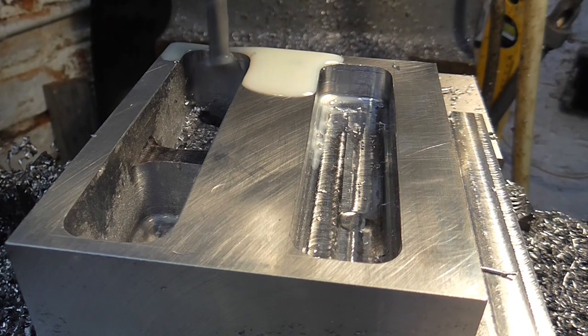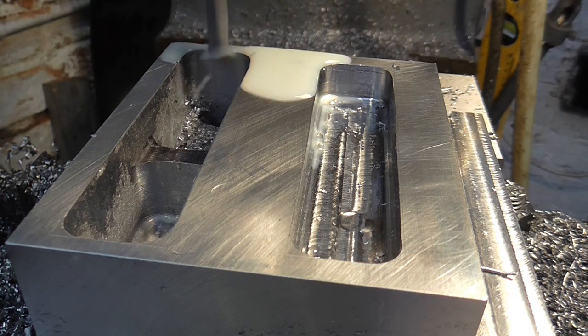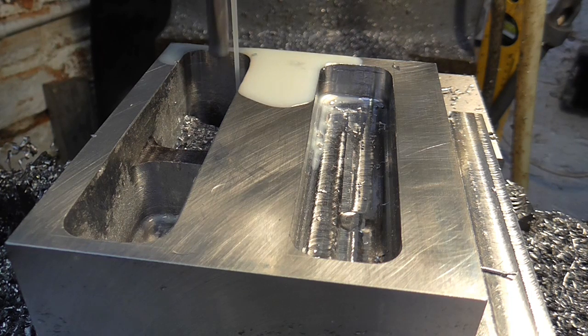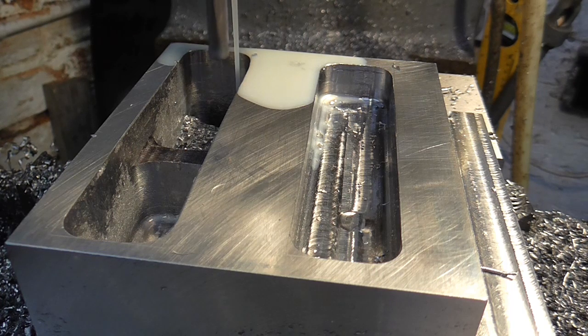What we're going to do is come up to level with the work piece, and then start coming down in 100 thou increments, that's about two and a half mil.